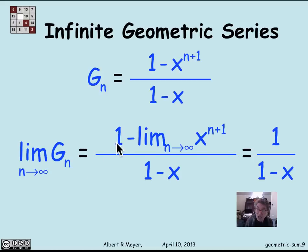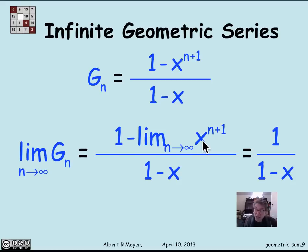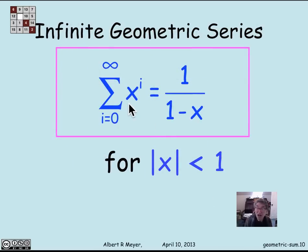g_n is (1 minus x to the n plus 1) over (1 minus x). Taking the limit, the x in the denominator doesn't have an n in it, so it becomes 1 minus the limit as n approaches infinity of x to the n plus 1, divided by 1 minus x. As long as the magnitude of x is less than 1, x to the n plus 1 goes to 0, and we get the simple formula: the sum from i equals 0 to infinity of x to the i equals 1 over (1 minus x), provided the magnitude of x is less than 1.